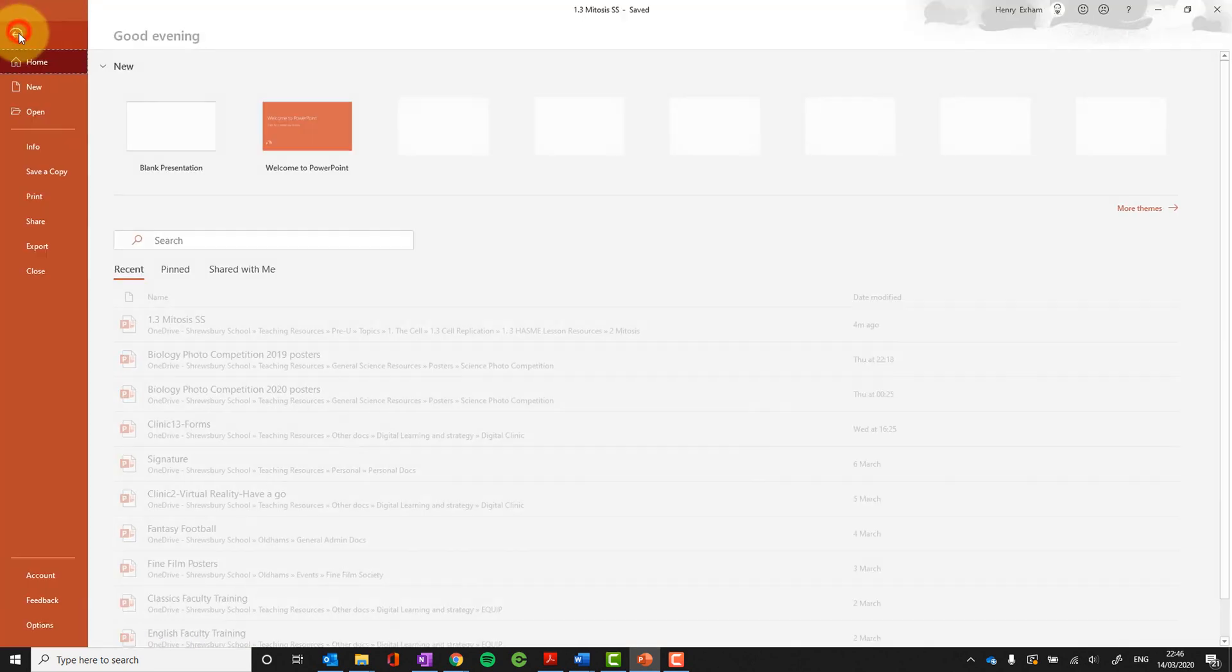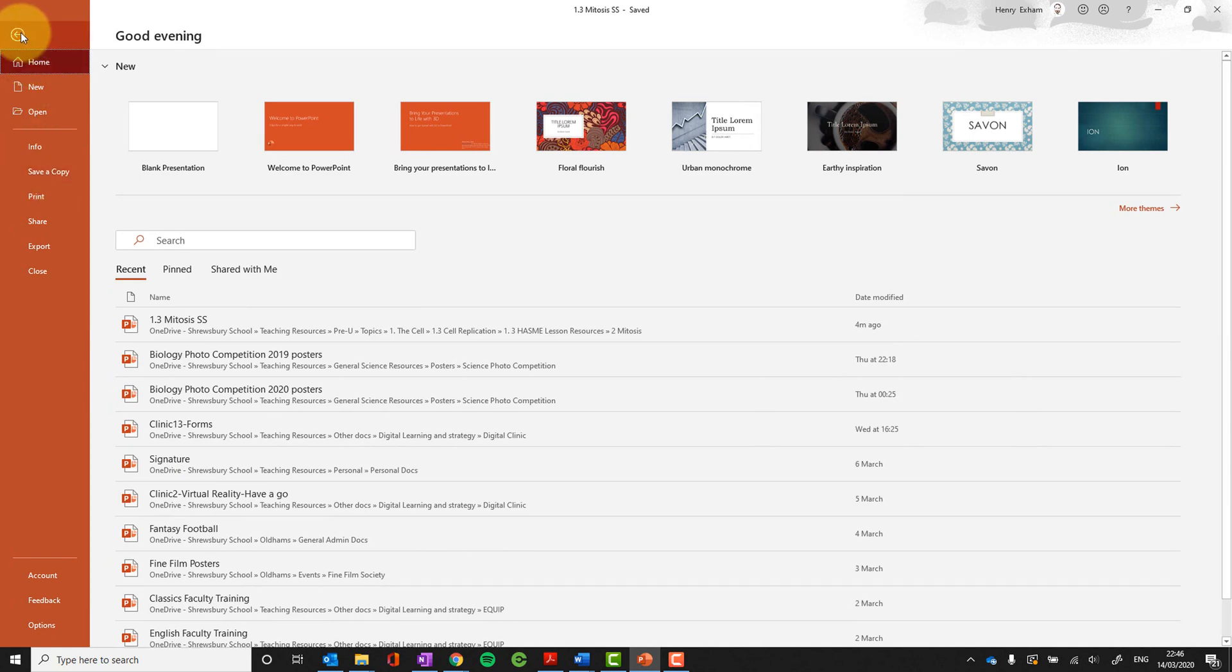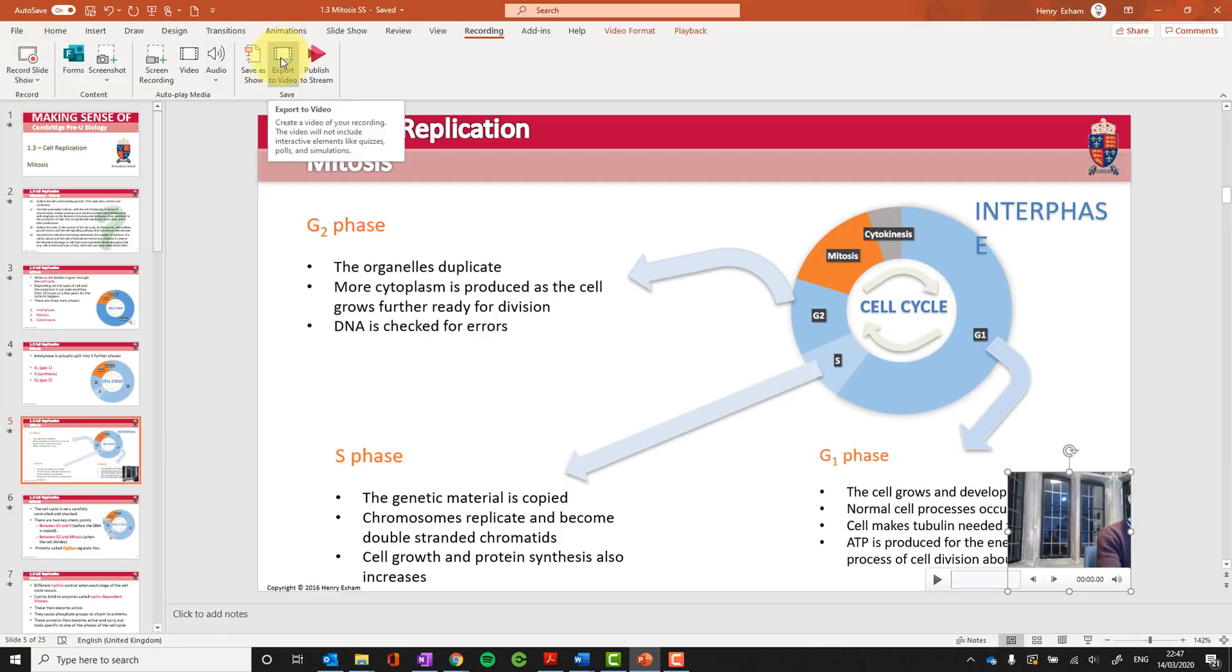I can then just save that, save a copy. I could export it to video, and that would turn the whole PowerPoint into a video file, which then I could upload to YouTube, or another video hosting site, or my VLE. So, very easy to add some audio into your PowerPoint, basically like a live presentation.